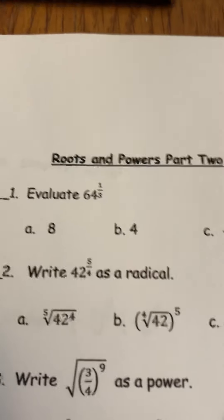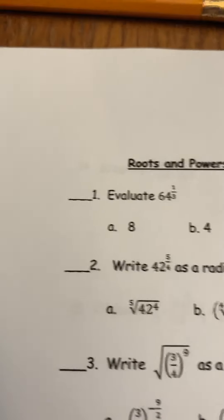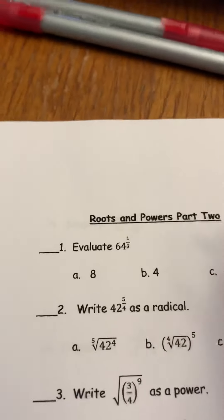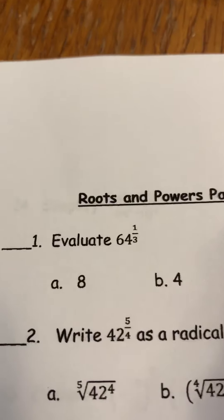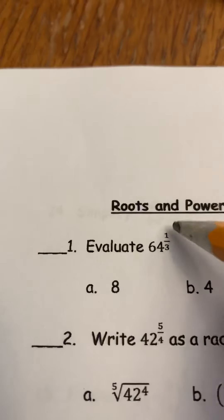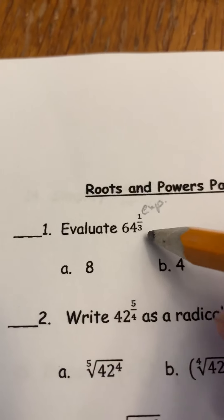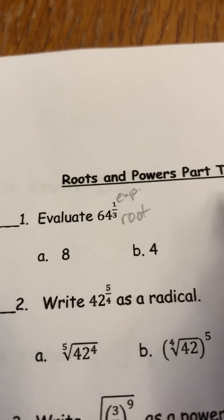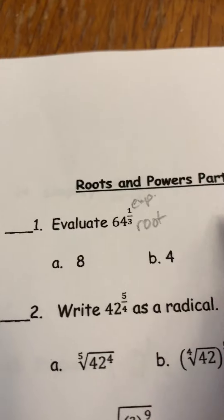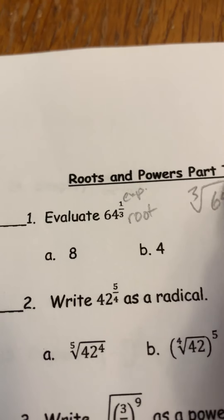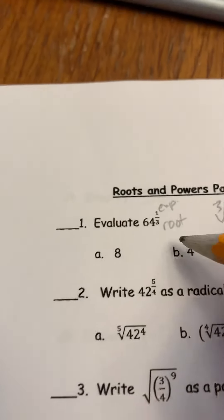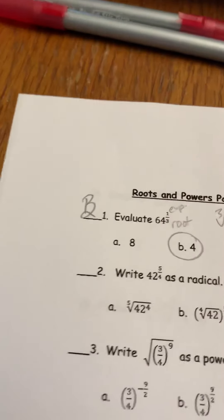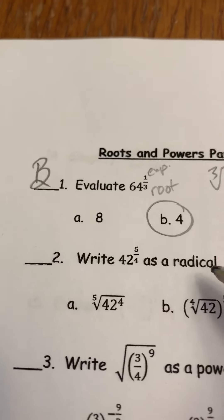Let's correct part two of this exam today. I'm hoping these videos are a little bit more helpful so you don't just see the answer but you see why you got that answer. Remember that when we have a rational exponent, the top number stands for the exponent and the bottom is the root, so we're really just finding the cube root of 64. Therefore our answer is B.